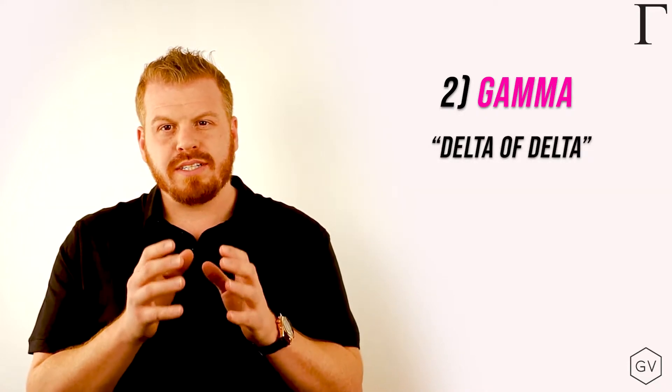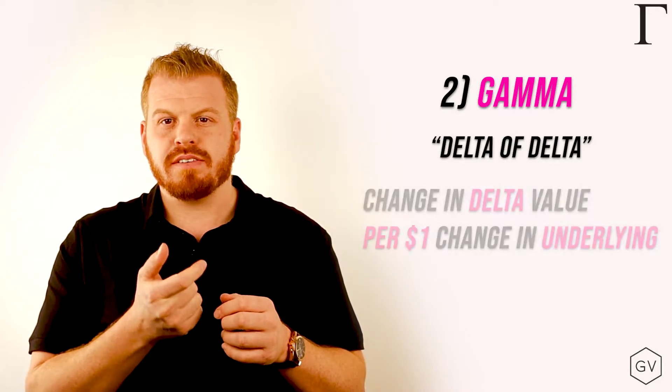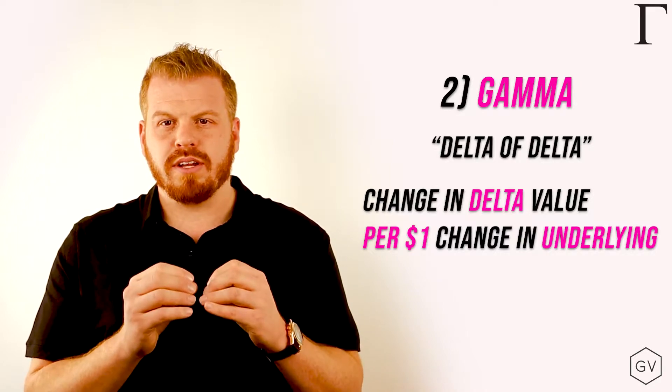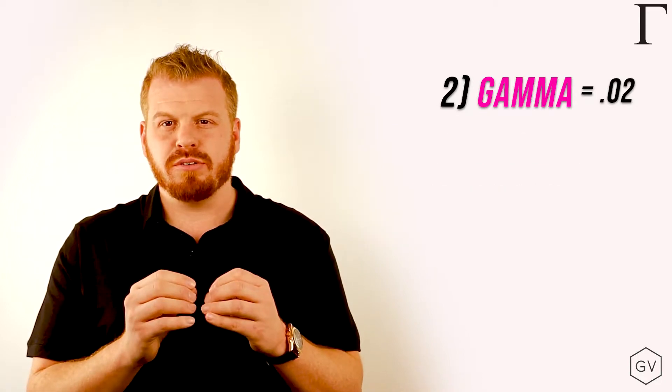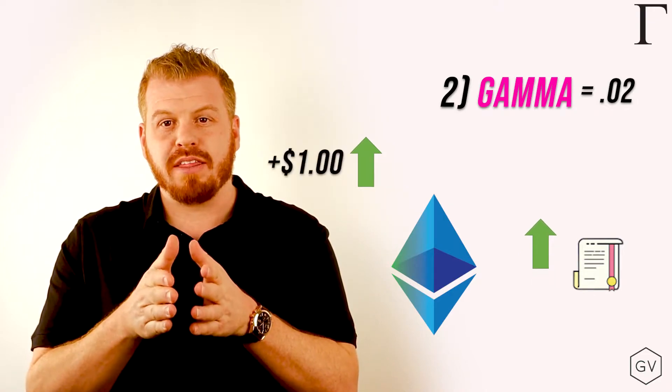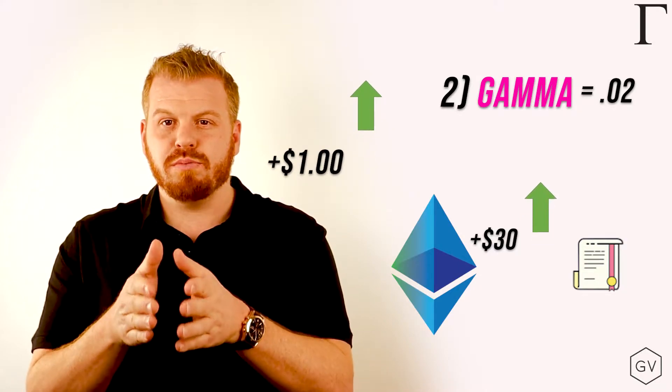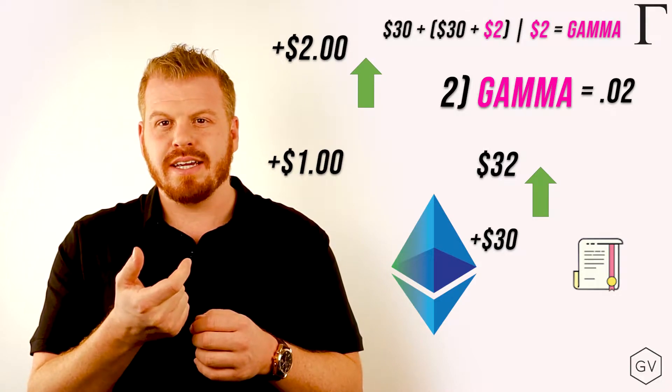Our second Greek of interest is called gamma. Gamma is a second-order derivative of delta. What this means is that as the underlying prices change, the value of the delta of the option also changes. By convention, gamma is also quoted in $1 increment terms. So if you have a gamma of .02, given our last example, the first dollar increased the option by 30 bucks, and then the second dollar rally in the underlying will increase it by 32 bucks. That differential from 30 to 32 in the delta is the gamma.